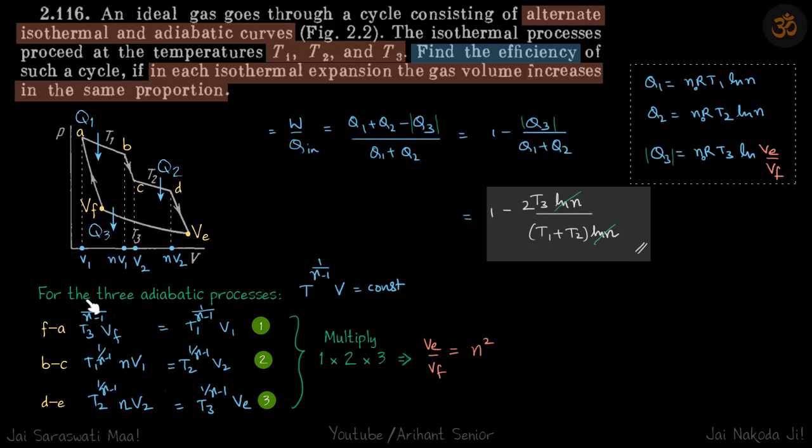For the process FA, for adiabatic processes we know T raised to the power 1/(γ-1) times V is constant. So at this point, temperature is T3, so T3^(1/(γ-1)) times Vf equals T1^(1/(γ-1)) times V1. Now for the process BC...